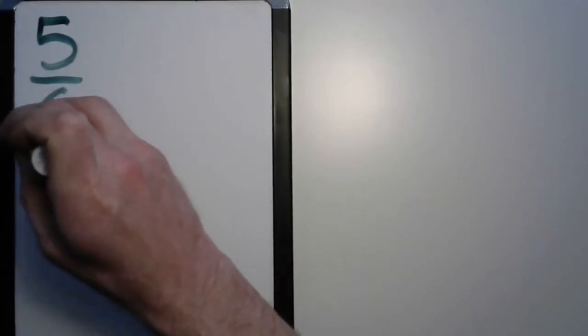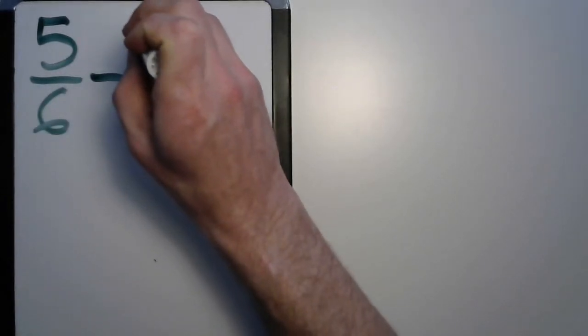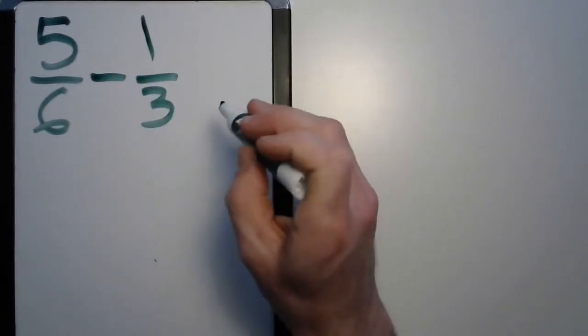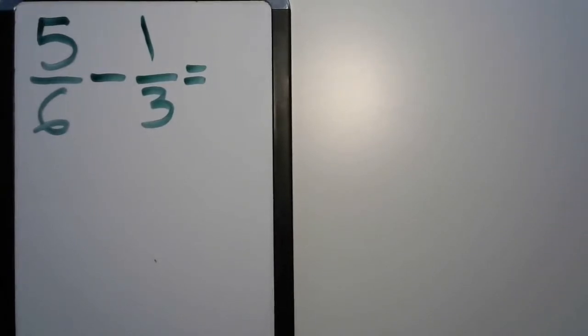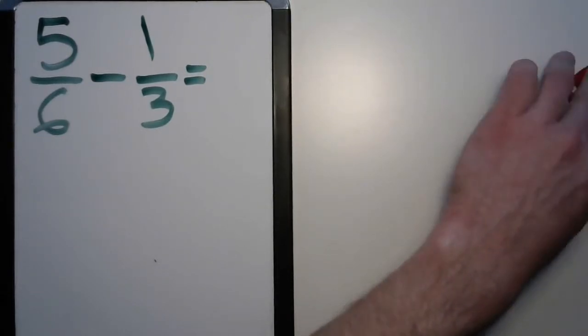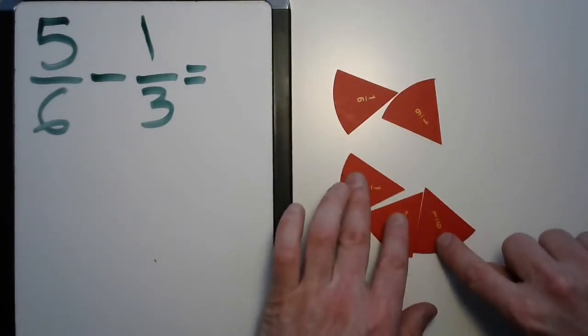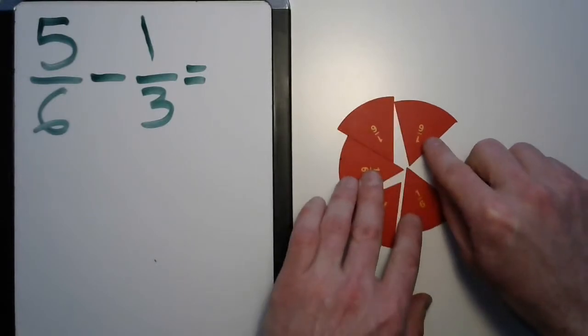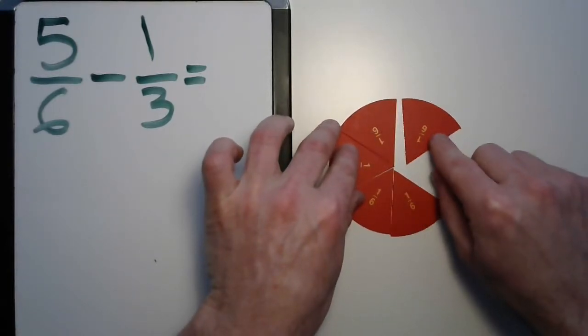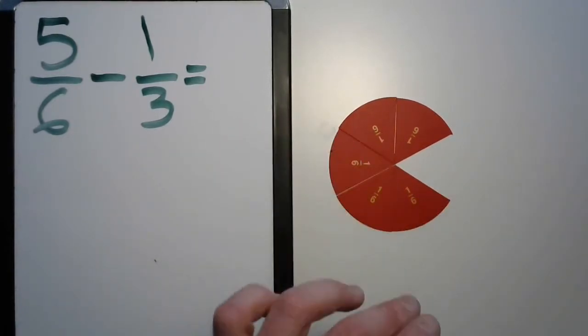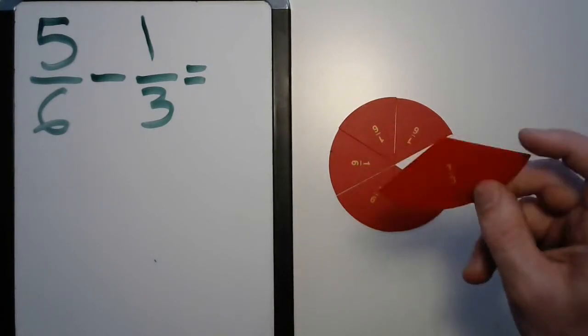What about one like five-sixths minus one-third? You can already see these are different families. But let's bring those all out here. Here's our five-sixths. Makes a pretty nice shape there.